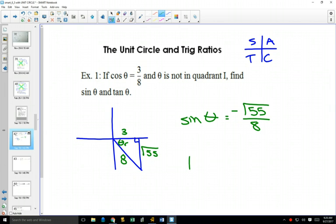Same thing with tan. Tan of theta opposite over adjacent and negative because it's in quadrant four.